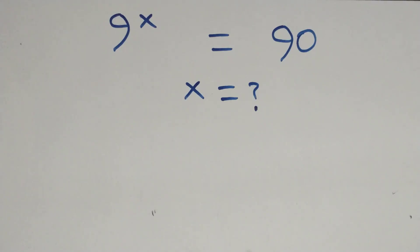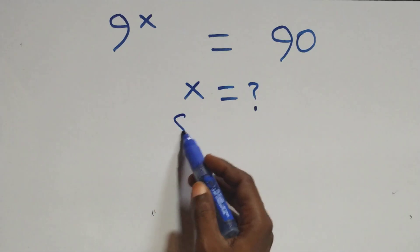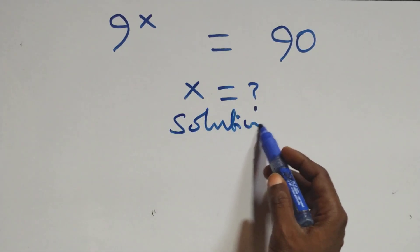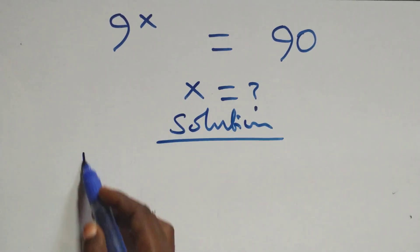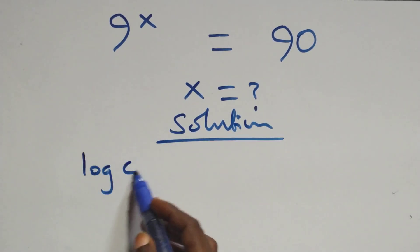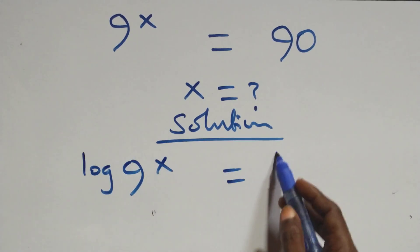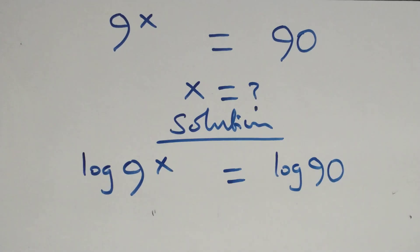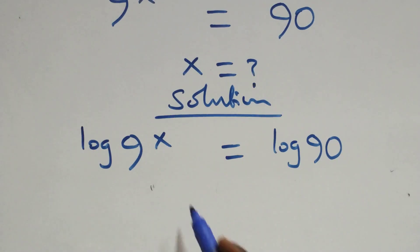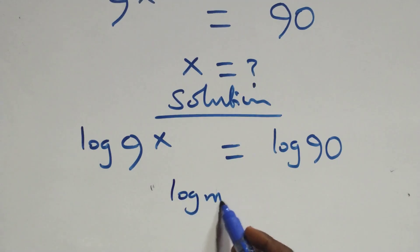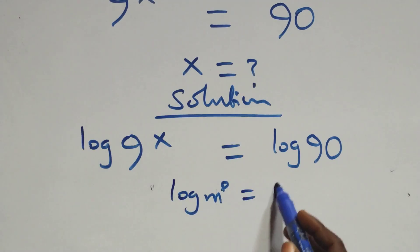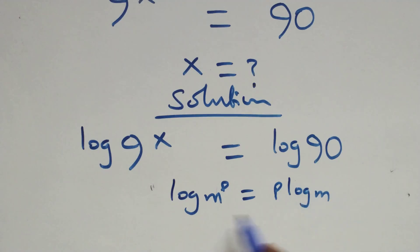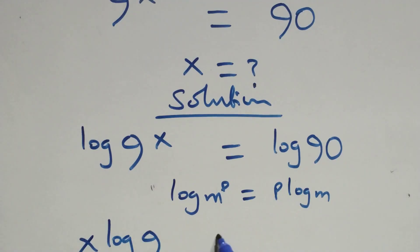Hello, you're welcome. I'll solve this nice exponential equation. What we have here, we take the log on both sides, and we have log 9 raised to the power x equals to log 90. Then we apply the power rule of logarithm: log m raised to the power p is the same as p log m. So we have x log 9 equals to log 90.